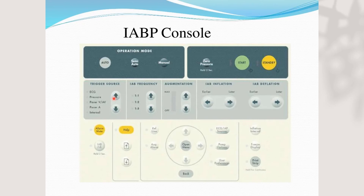The source of trigger may be ECG, pressure waveform, or pacemaker. You select one based on the clinical situation. The frequency setting determines whether the balloon gives a pulse at 1:1, 1:2, or 1:3 ratio — this will be explained later. Augmentation refers to the degree of balloon inflation. When fully inflated, the balloon takes up 80 to 85 percent of the aortic cross-section, without completely occluding the aorta.